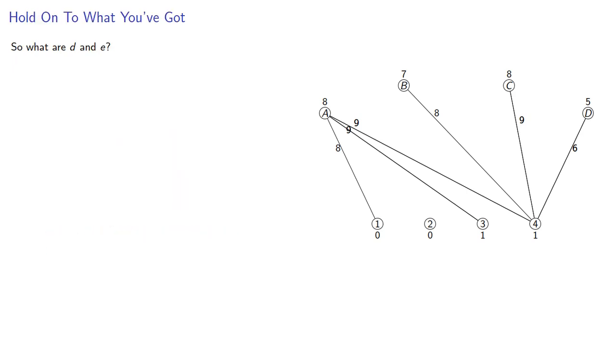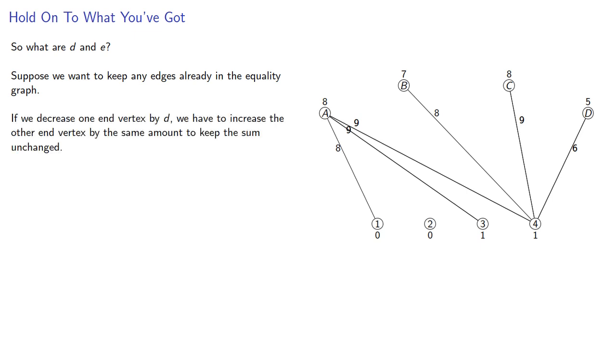So what are d and e? Well, suppose we want to keep any edges already in the equality graph. If we decrease one end vertex by d, we have to increase the other end vertex by the same amount to keep the sum unchanged.